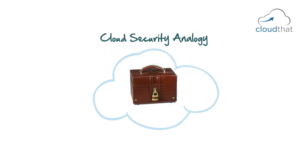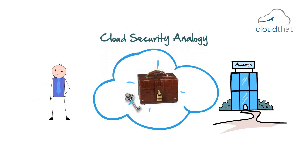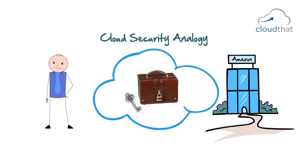Cloud security analogy: the cloud service provider is like a box maker. The box maker's responsibilities are to provide a locking mechanism so the box cannot be opened without the right key, and to make the box physically strong. The user's responsibility is to actually lock the box — the maker can provide the mechanism but cannot force the user to use it. It is also the user's responsibility to keep the key safe; if someone gets the key and opens the box, it's not the box maker's fault.